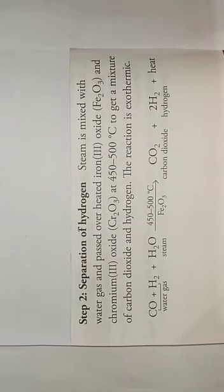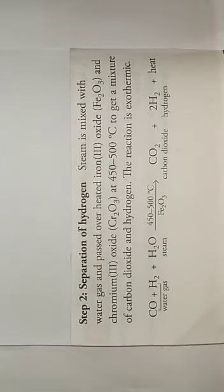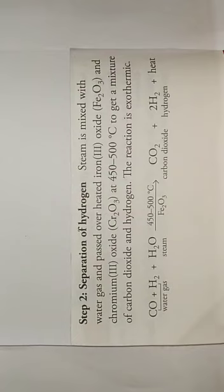In the next step, this steam is mixed with water gas and passed over heated iron oxide and chromium oxide at around 450 to 500 degrees Celsius, which leads to the formation of carbon dioxide and hydrogen gas. This reaction is exothermic, so a large amount of heat energy is liberated.